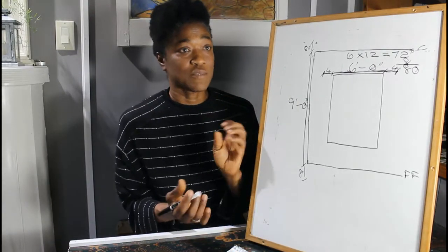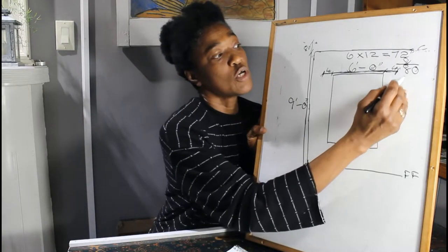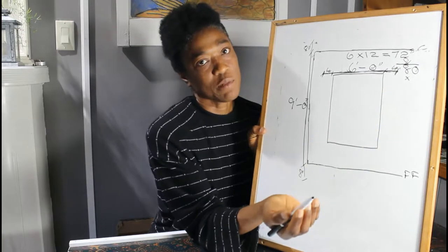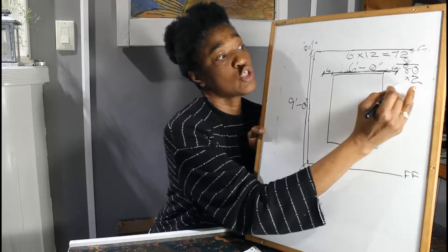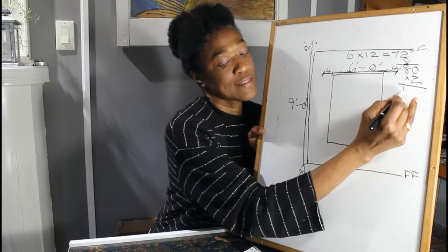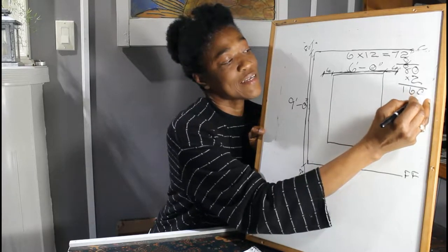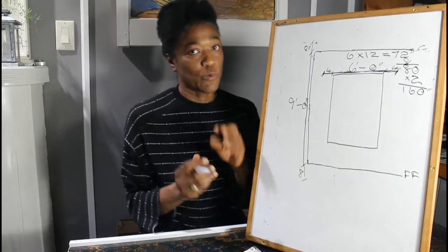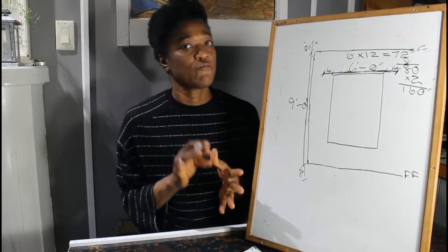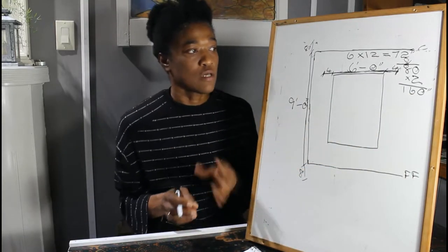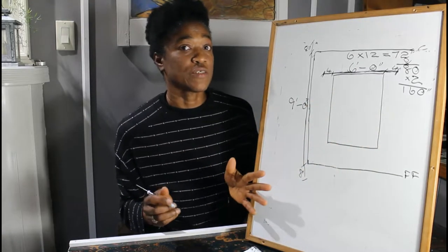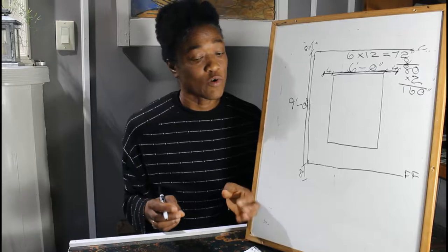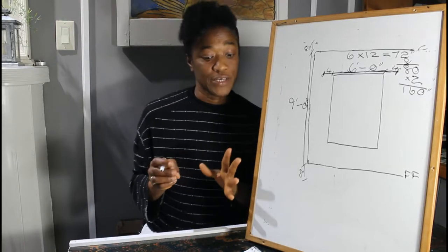Two times. So let's use two times the width. We call it double fullness. Multiply the 80 by two. That's 160 inches. We're working in inches now. Remember, we converted the feet to inches. So we have 160 inches with double fullness for our draperies.